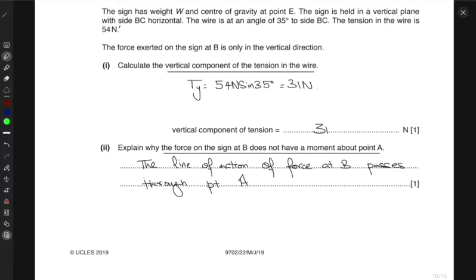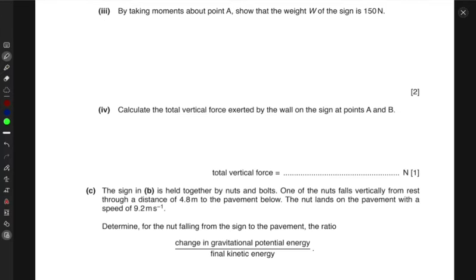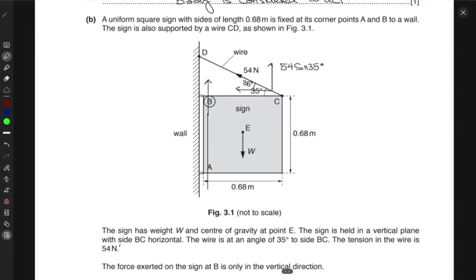Which implies perpendicular distance is zero, hence the moment would be zero. Now by taking moments about point A, show that the weight of the sign is 150 newton. So we have to take moments about A. If you go back, look at this thing, the moments about point A.